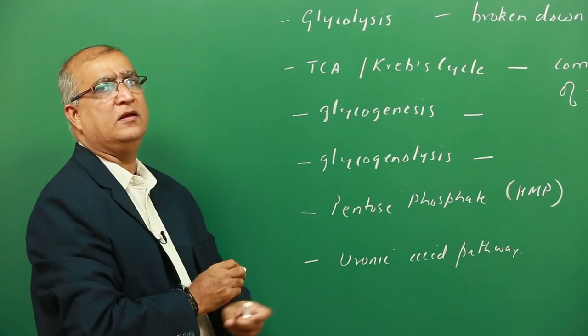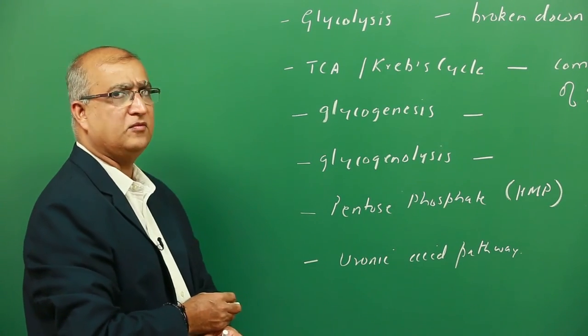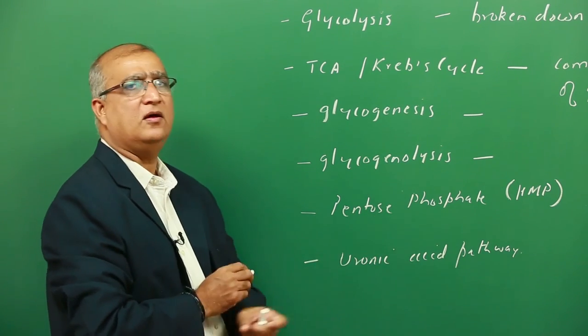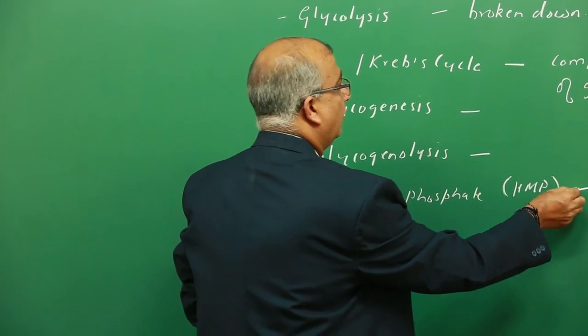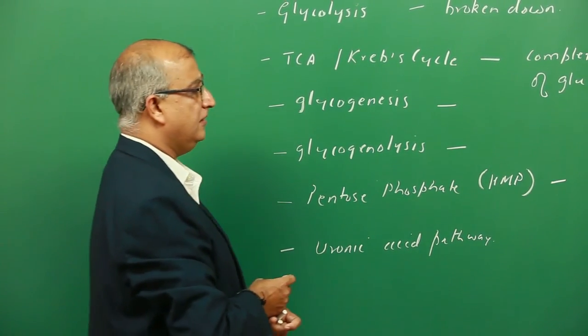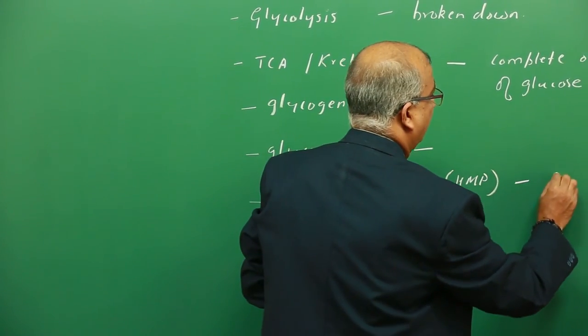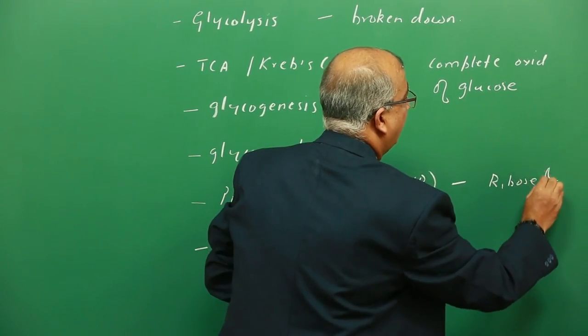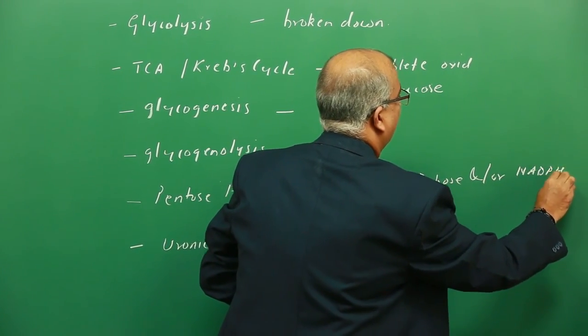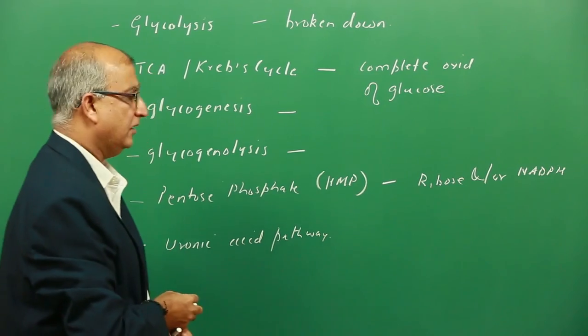Another pathway of carbohydrate metabolism or glucose metabolism is the pentose phosphate or the HMP pathway. The major role of this pathway is not to actually provide energy, but to provide ribose and/or NADPH for other biosynthetic pathways.